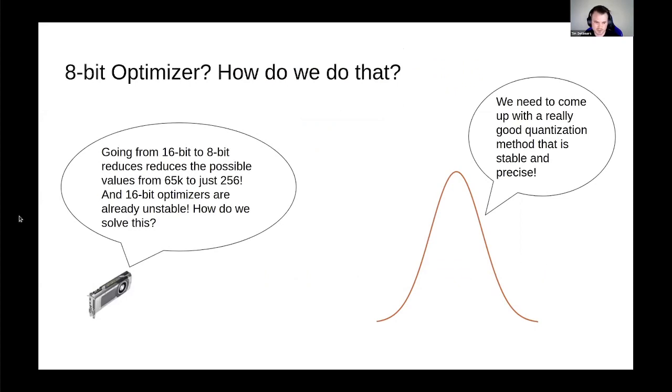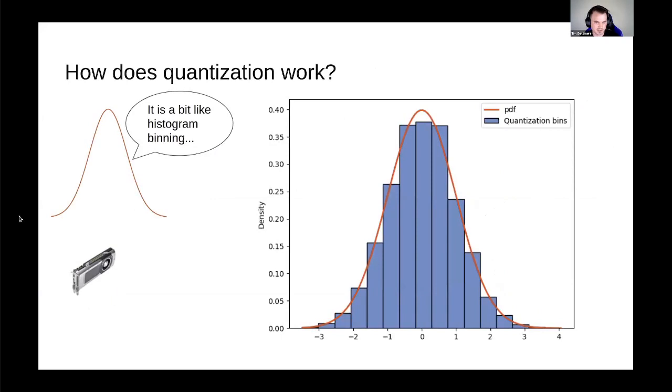The little GPU was nervous. Going from 16-bit to 8-bit reduces the possible values from 65,000 to just 256. And we already know that 16-bit optimizers are pretty unstable and hard to deal with. How do we do that? Calm down, my little brother, said the normal distribution. We just need to find a good quantization method that is both stable for training and also precise in quantization error. And the little GPU asked, what is quantization?